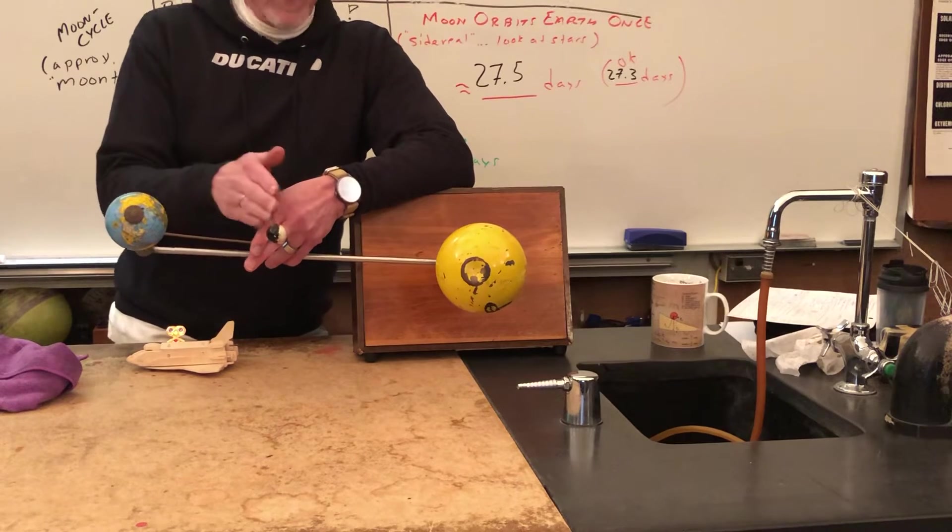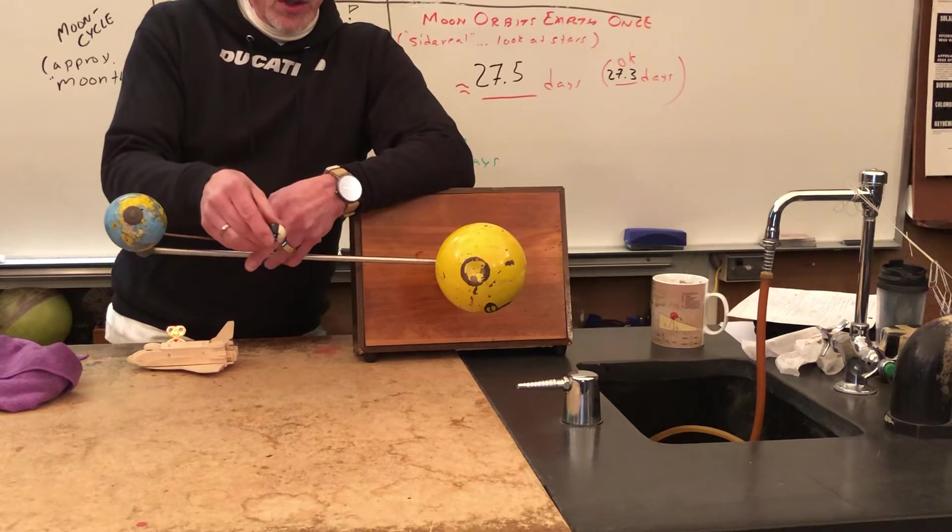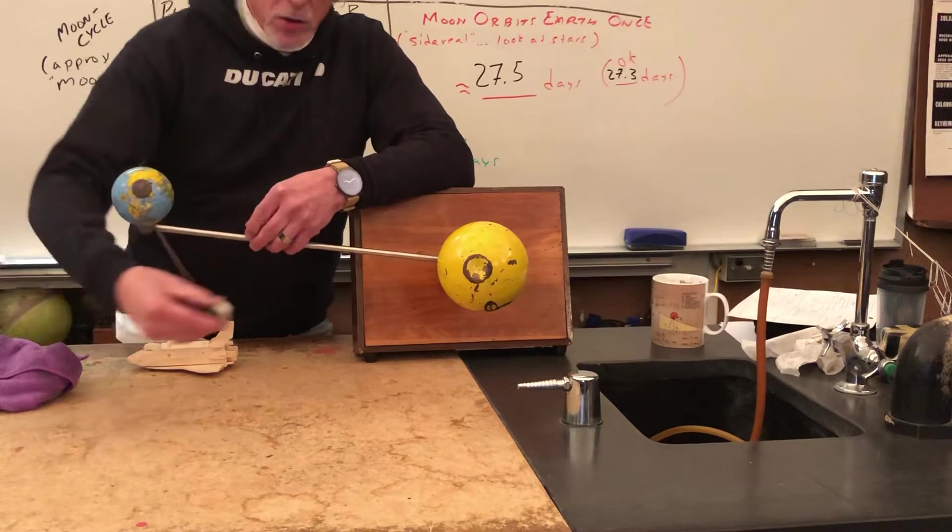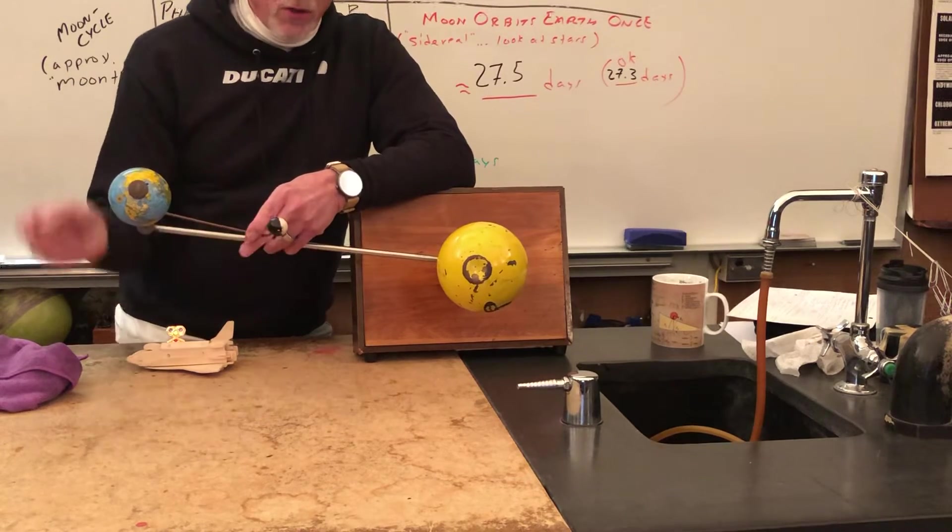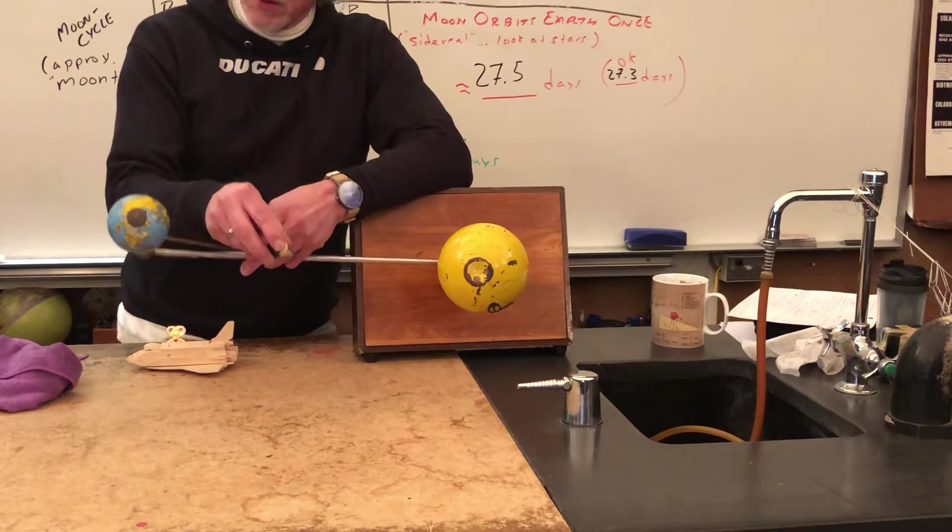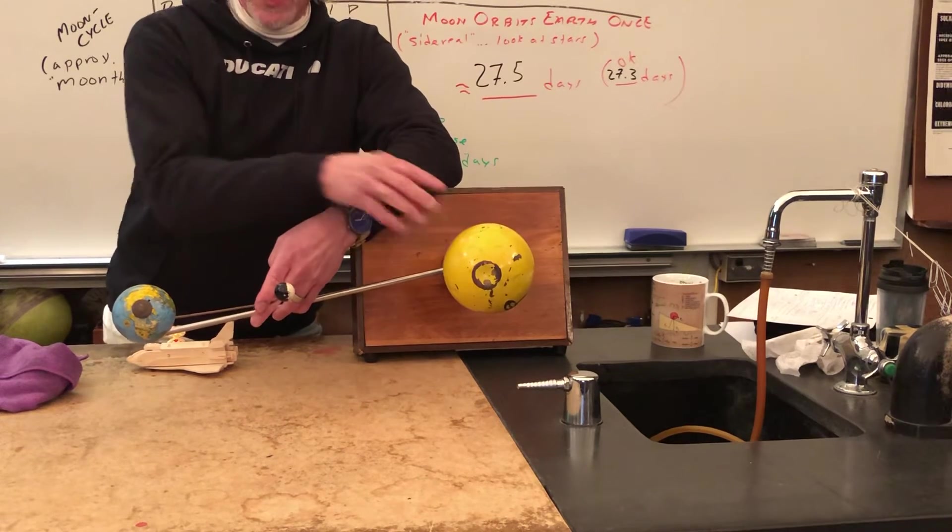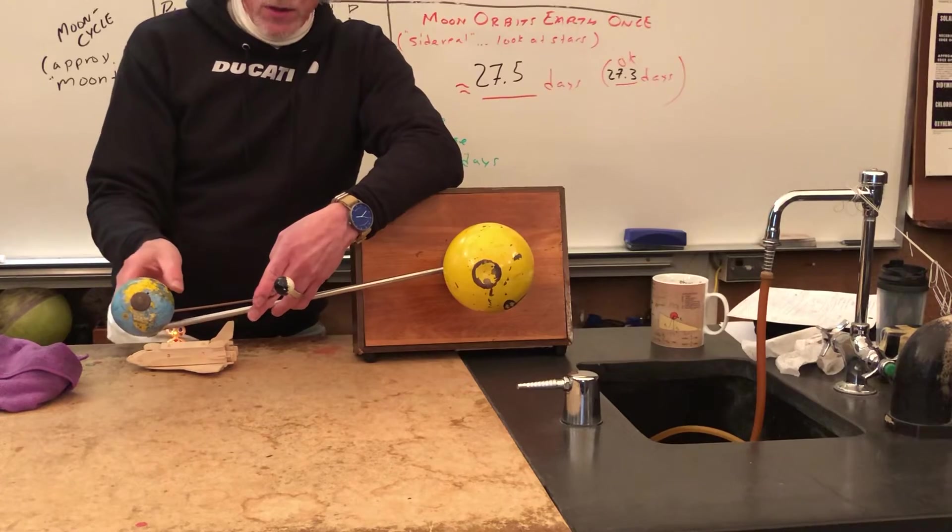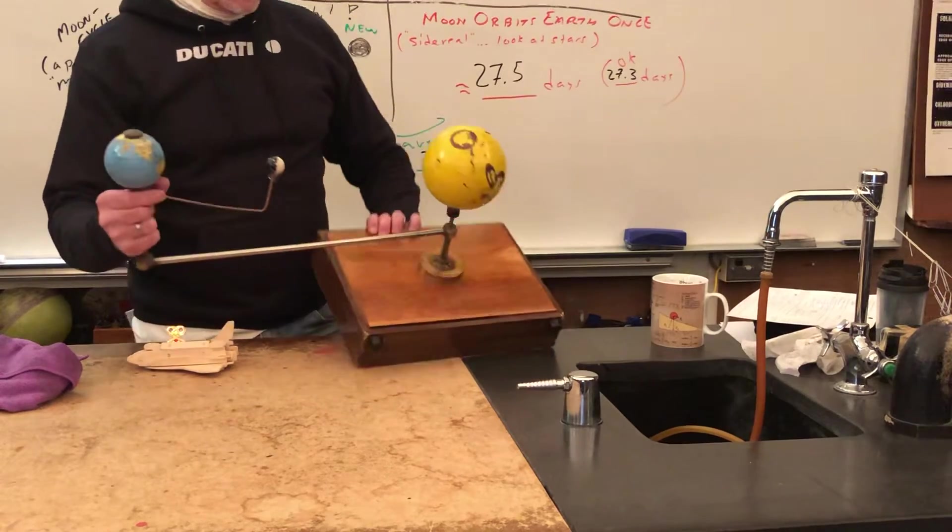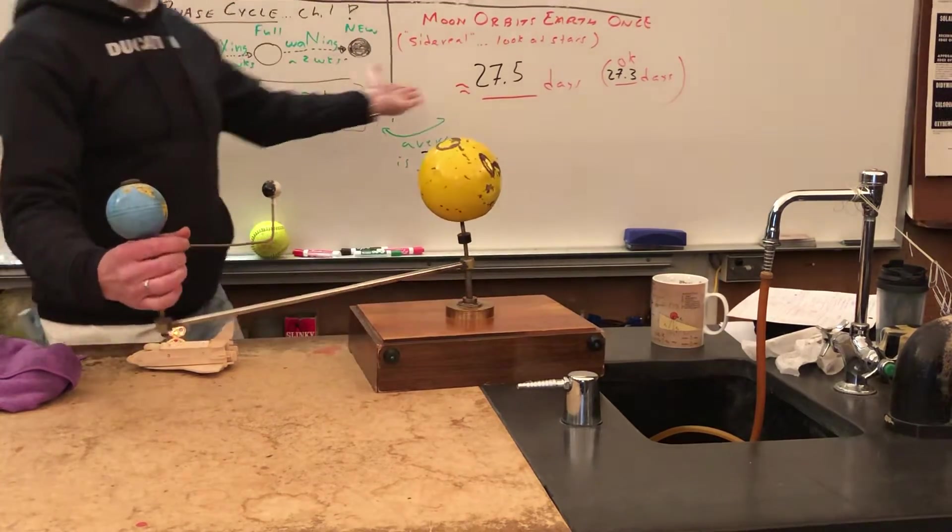And so we've got a new and then to orbit back to new. So one orbit, you'd go from new to new, except Earth is orbiting sun and carrying its moon with it. So let's take a look and see why there's a difference here.